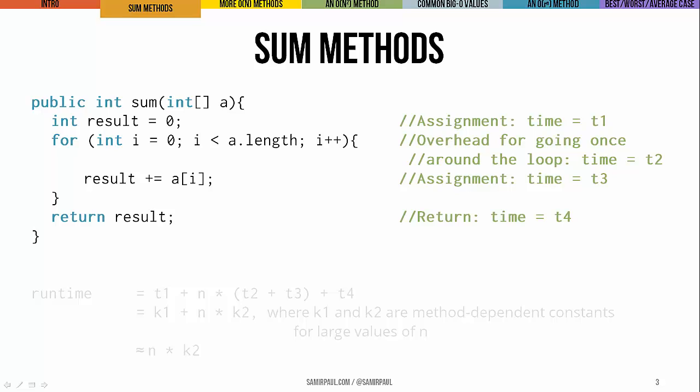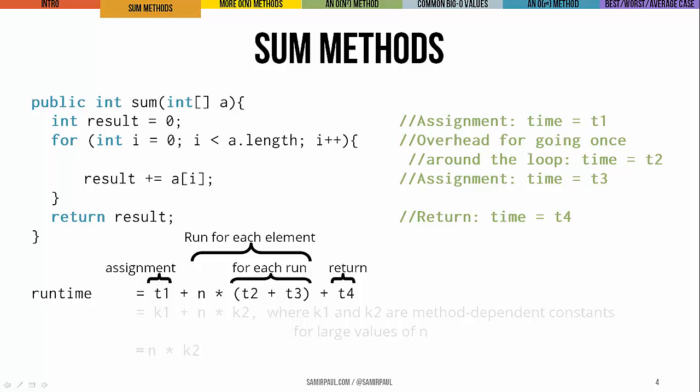We'll assume that the assignment statement int result equals zero takes T1 units of time. The overhead for a for loop going around a single time takes T2 units of time. The assignment inside the loop takes T3 units of time every time it runs, and the return statement takes T4 units of time. If we add these times together, remembering that the method goes around the loop n times — where n means the array's size — we get a runtime expression: the assignment plus the loop expenditures times the number of elements, plus the time for the return statement.